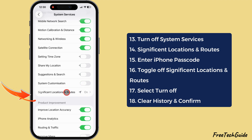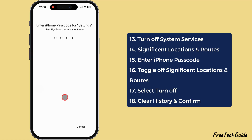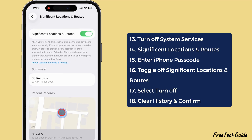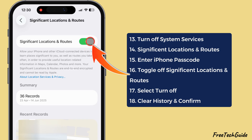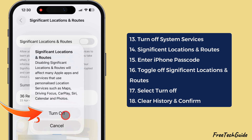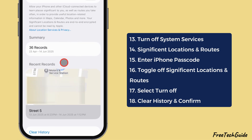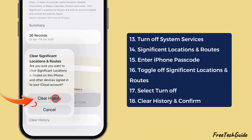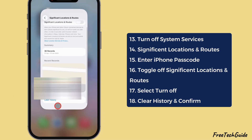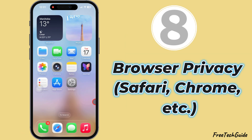Tap on Significant Locations and Routes and enter your iPhone passcode. If you have enabled Significant Locations and Routes, your iPhone and other iCloud-connected devices will track where you often go and share with apps or Apple. Turn off the toggle next to Significant Locations. Also, tap on Clear History and select the Turn Off option to delete all previous records.